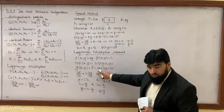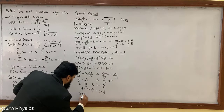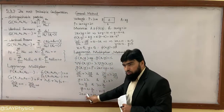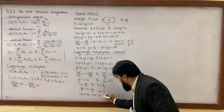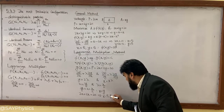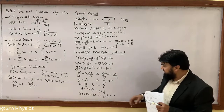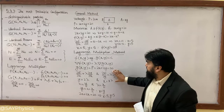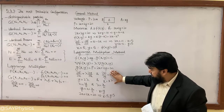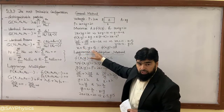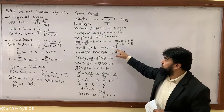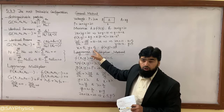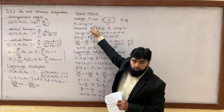Since x equals y, we go back to the constraint: 2x + 2y = 20. Substituting y = x gives 2x + 2x = 4x = 20, so x = 5, and therefore y = 5. This confirms that the Lagrange multiplier method gives the same result: x = 5, y = 5, and the area is maximum only when both dimensions are equal.